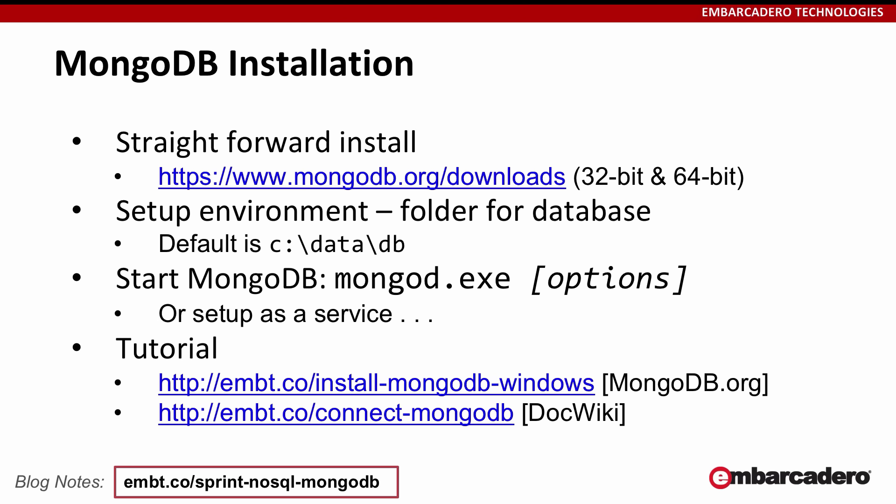Installing MongoDB is actually pretty straightforward. You just choose whether it's 32-bit or 64-bit. For Windows, they have an OS X install as well. The default data directory is C:\data\db. When you finish installing, there are no shortcuts on your desktop or in your start menu, so you have to go to their documentation to learn how to start it. Essentially, there's an executable called mongod that you run to start MongoDB. You can set it up to start as a service so it starts automatically, or start it manually and use Ctrl-C to terminate it — it cleans up and shuts down appropriately.